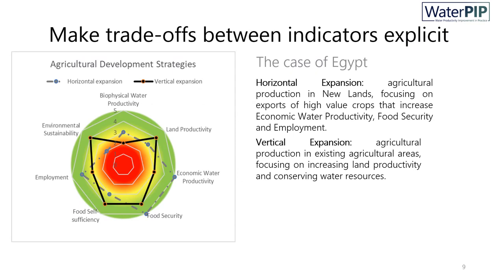Let me now showcase the assessment framework on the basis of the example of Egypt. Egypt has two development strategies. The first one is the horizontal expansion, where they will expand the area of land cropped, and the other one is the vertical expansion, where they will increase crop productivity per area of land. As you can see, they score differently in our assessment framework. The dashed gray line is the horizontal expansion, whereas the solid black line is the vertical expansion. In the case of horizontal expansion, it scores higher on water productivity, employment, and food security, whereas the vertical expansion scores higher on land productivity, food self-sufficiency, and environmental sustainability. And of course, this is open for discussion, but it shows the trade-offs between the different development strategies.